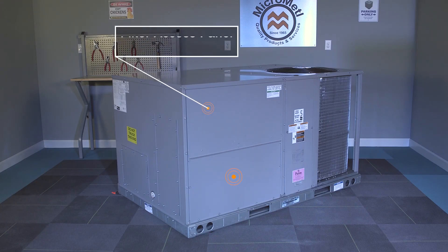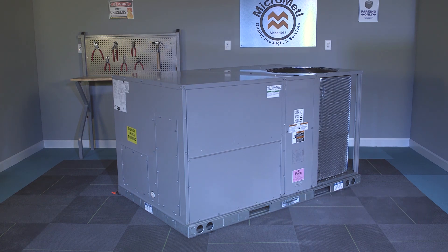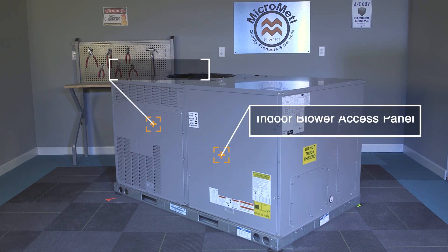Begin by removing the filter access panel and indoor coil access panel. Next, remove the unit control box panels and indoor blower access panel.